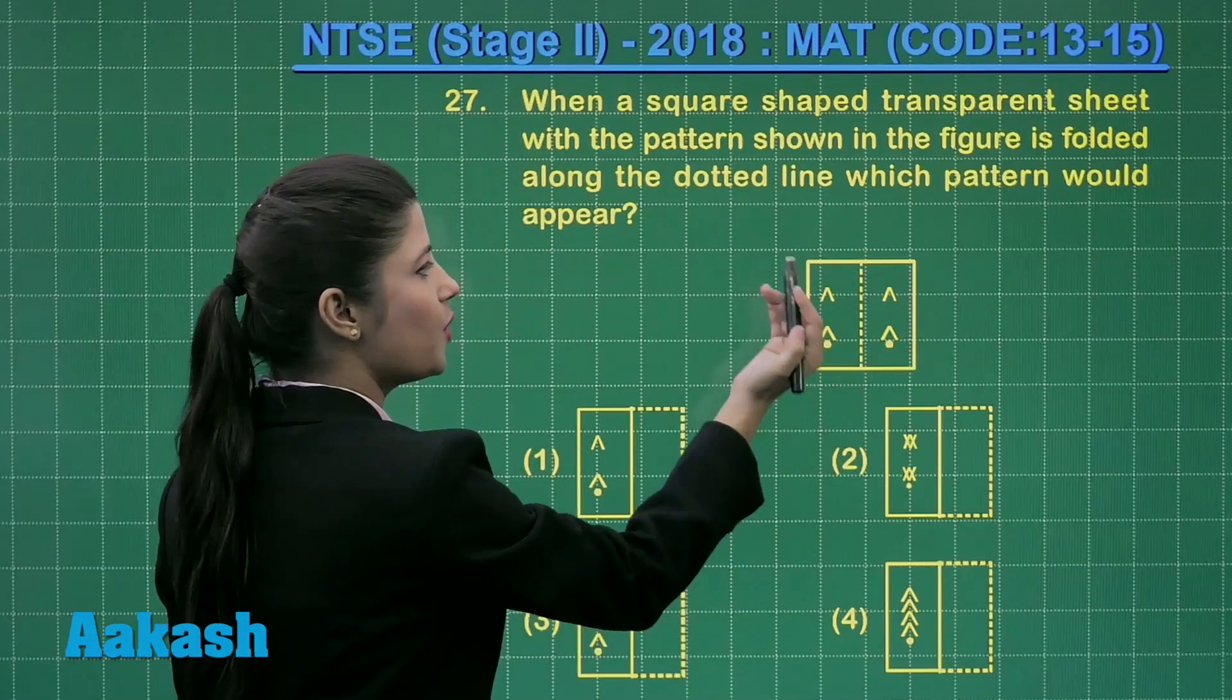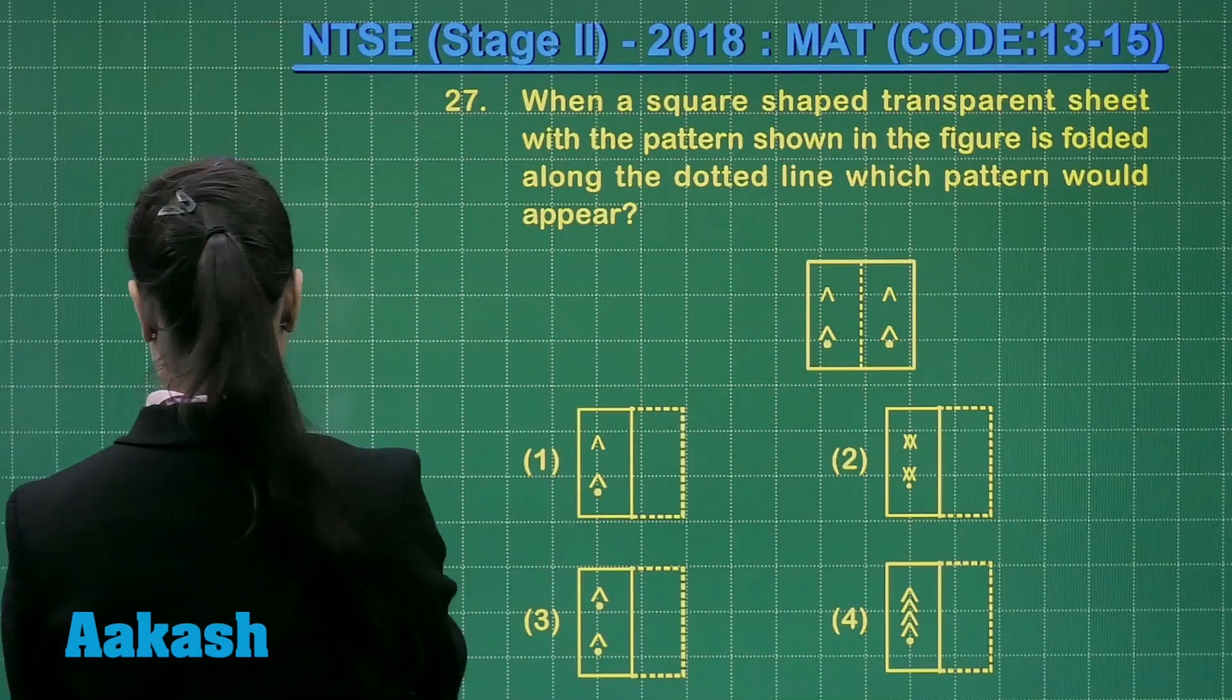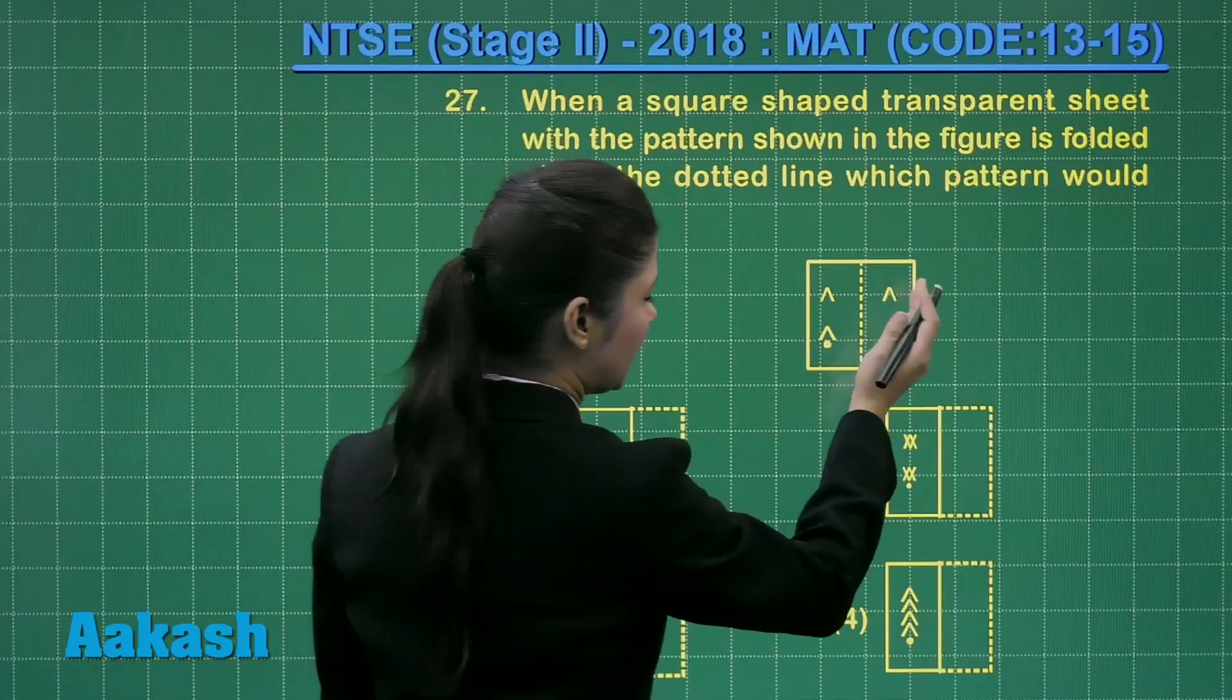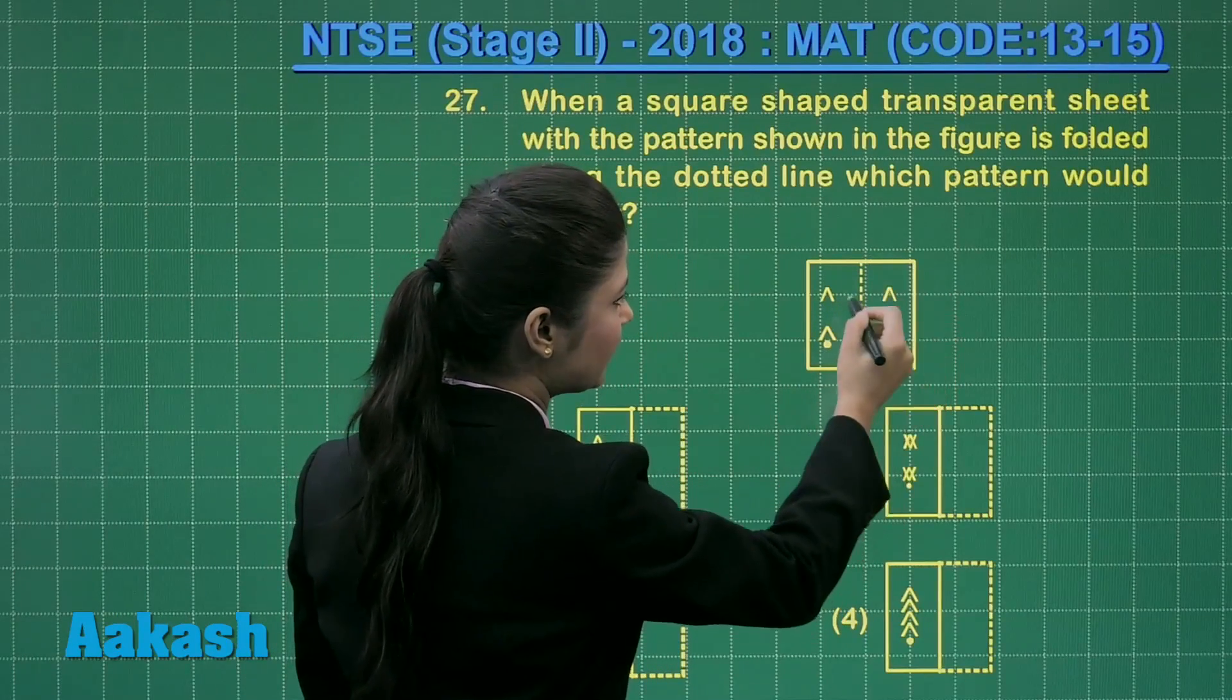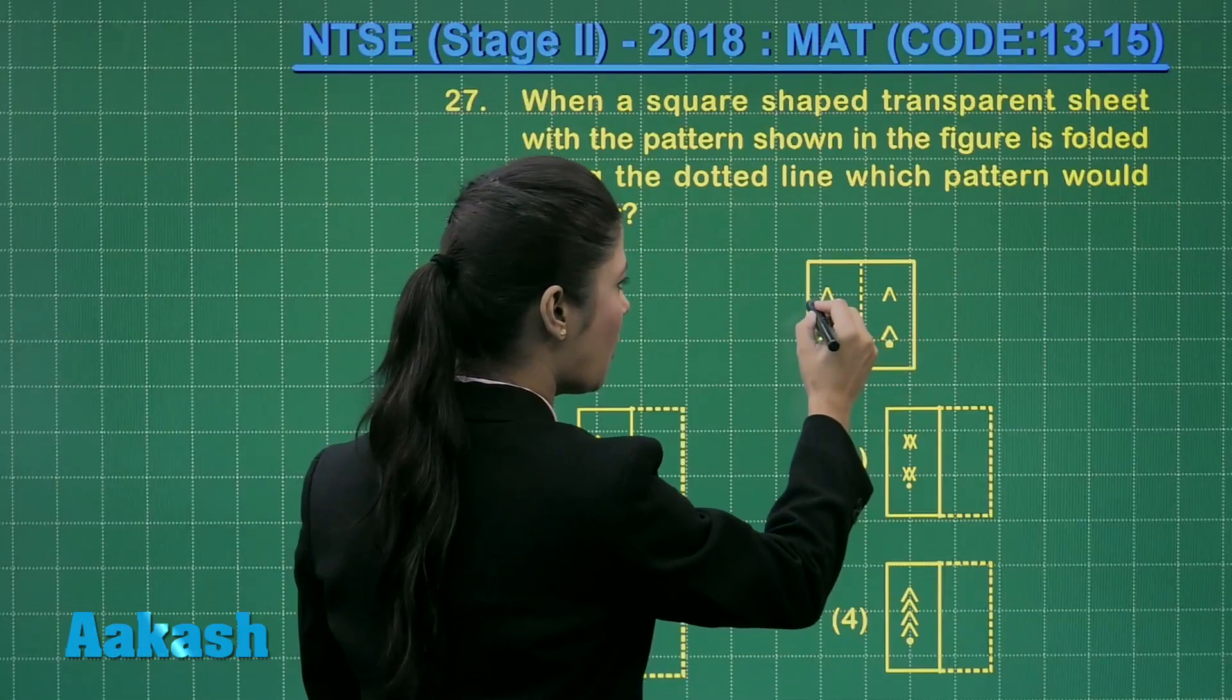This side will completely overlap over the left one. So you will find here that when you are folding this paper, you will find an impression of these two on this side.